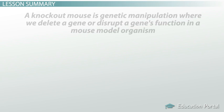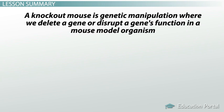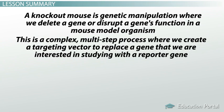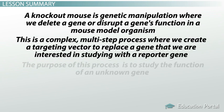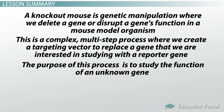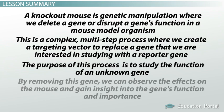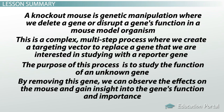Now, let's review today's lesson. In this lesson, we created a knockout mouse. A knockout mouse is a genetic manipulation where we delete a gene or disrupt a gene's function in a mouse model organism. This is a complex, multi-step process where we create a targeting vector that essentially replaces a gene we are interested in studying with a reporter gene. The purpose of this process is to study the function of an unknown gene. By removing this gene, we can observe the effects on the mouse and gain insight into the gene's function and importance. This can be done in other model organisms as well, however the method varies.